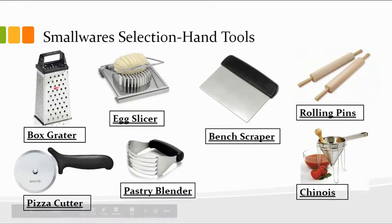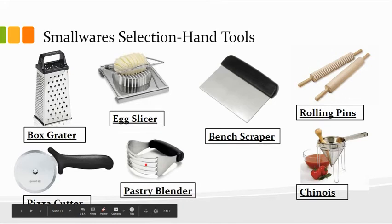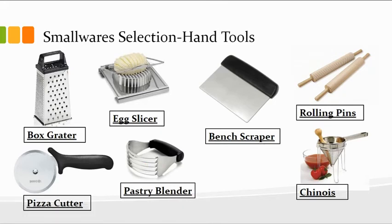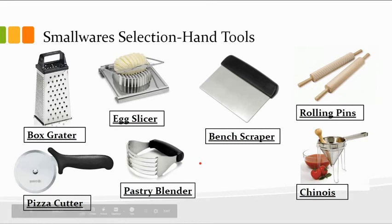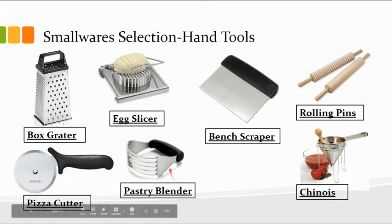A box grater — the different sides give you different sizes of shreds, like if you were doing shredded cheese. One side would be finely shredded and another would be a thicker shred. Pizza cutter, egg slicer. A pastry blender is used whenever you're making pastry doughs like pie crust. It breaks up the fat that you have to mix in with the dough — you don't want a solid chunk of fat, and you don't want to melt it either because it will make the consistency too sticky and liquidy. You get cold butter, chop it up initially, then use the pastry blender to finish breaking it down to about a pea-size chunk of fat, which creates those nice flaky layers in your pie crust. A bench scraper is used for dough. You've got your rolling pins, and then this is called a china cap — also, I believe, pronounced chinois — but I've always called it a china cap.